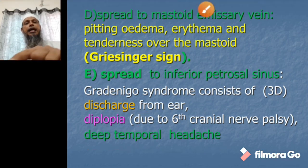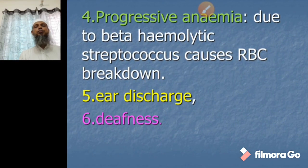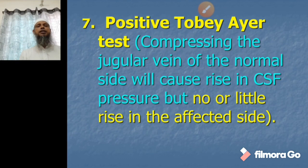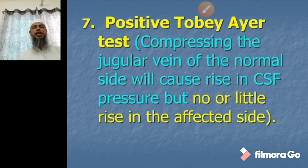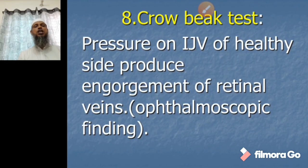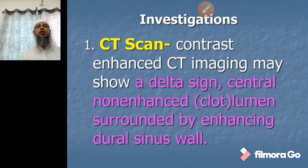There will also be progressive anemia due to beta-hemolytic Streptococcus causing RBC breakdown, and ear discharge with deafness. The Tobey-Ayer test is positive: compressing the jugular vein on the normal side causes a rise in CSF pressure, but little or no rise when pressing on the affected side. The Crowe-Beck test will also be positive: pressure on the internal jugular vein of the healthy side produces engorgement of the retinal veins, which can be seen by ophthalmoscope.